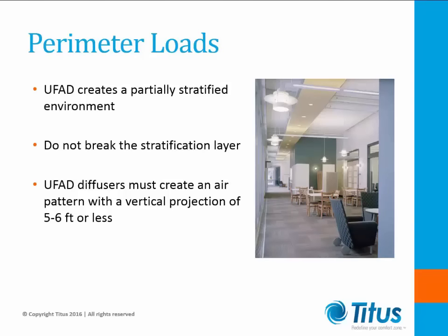Before we can address perimeter heating loads, it's important to understand what we need to do from an air distribution perspective. Our UFAD system is creating limited stratification in the occupied zone, taking advantage of the natural buoyancy of interior heat from people, office equipment, and lighting to rise and leave the room. Therefore, it's critical that any perimeter heating solution must not interfere with the interior system. Any UFAD outlets located on perimeters need to create a vertical air pattern that provides coverage on exterior walls and glass, but the vertical projection should never exceed the height of the occupied zone. If the perimeter outlets break through the stratification layer, heat and pollutants are likely to be drawn back into the occupied zone, defeating the purpose of the UFAD system.